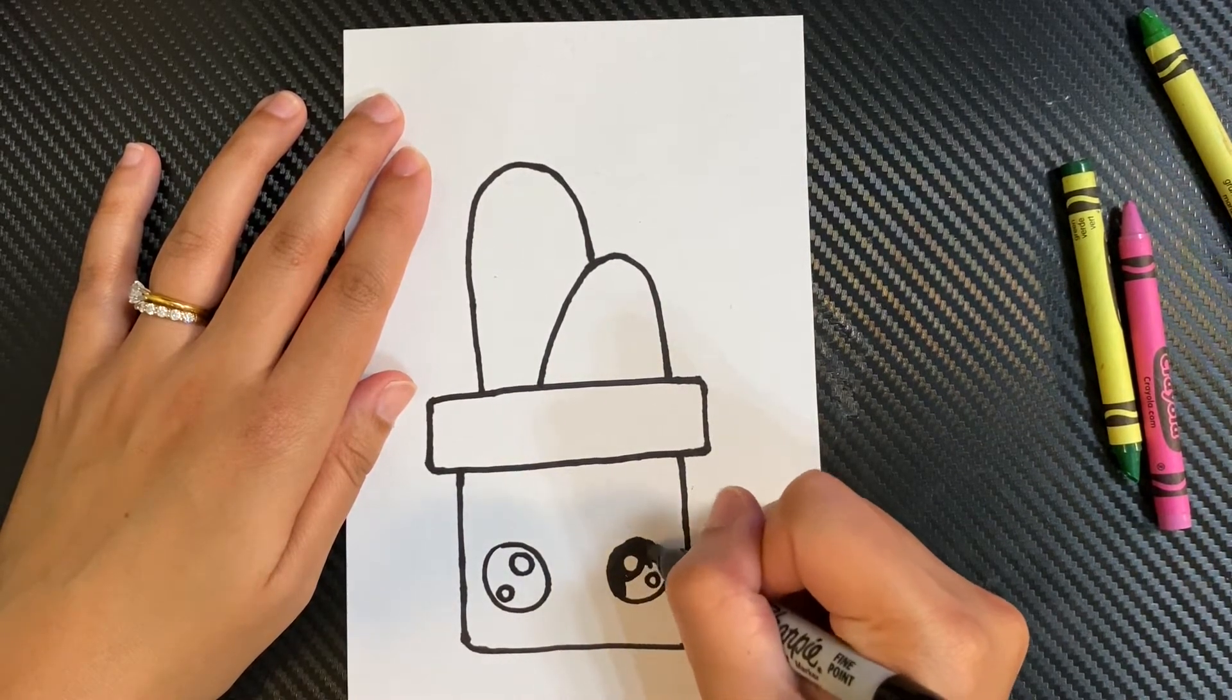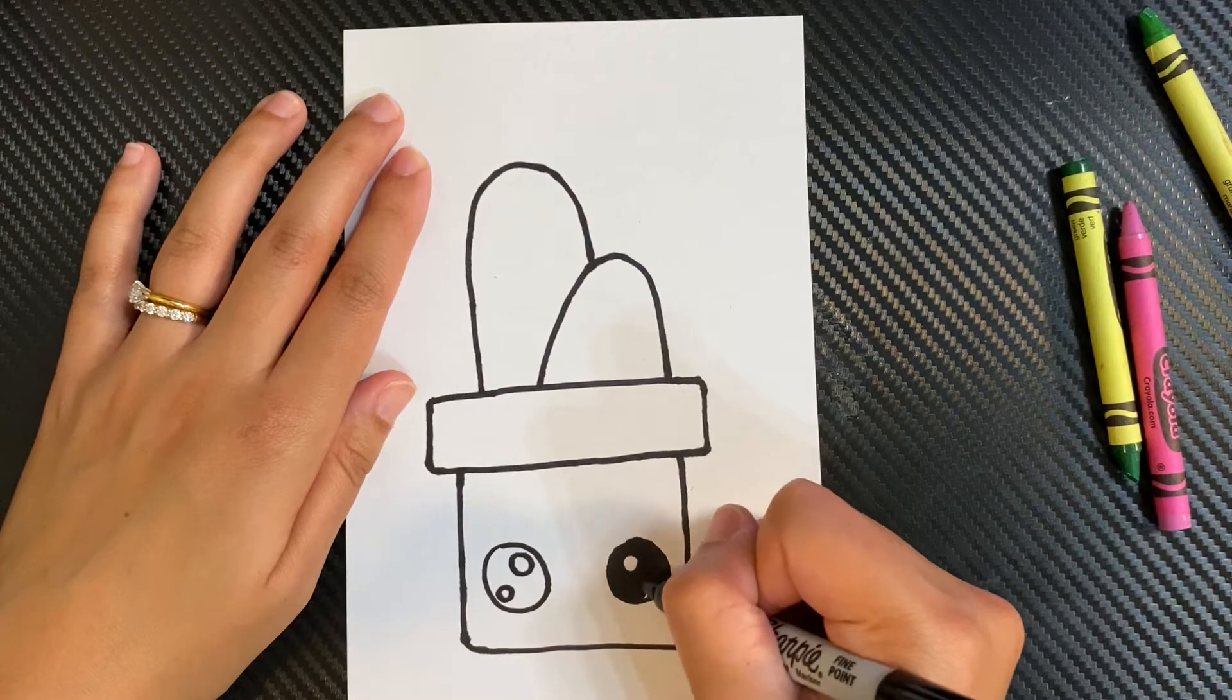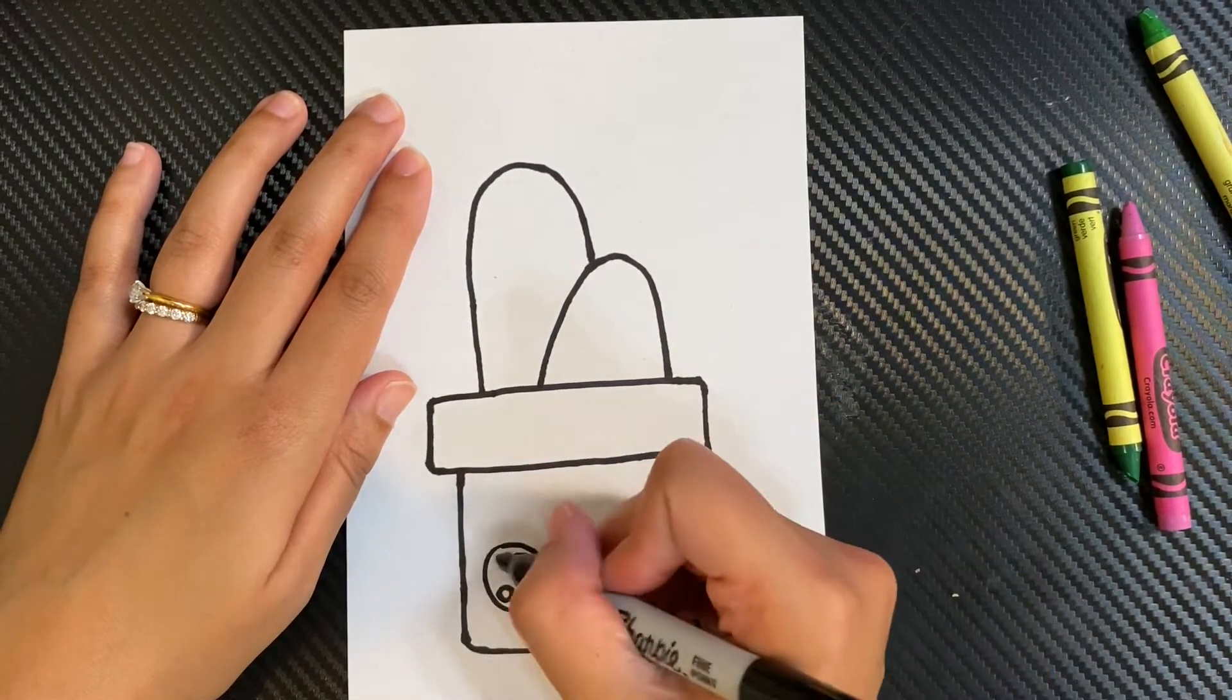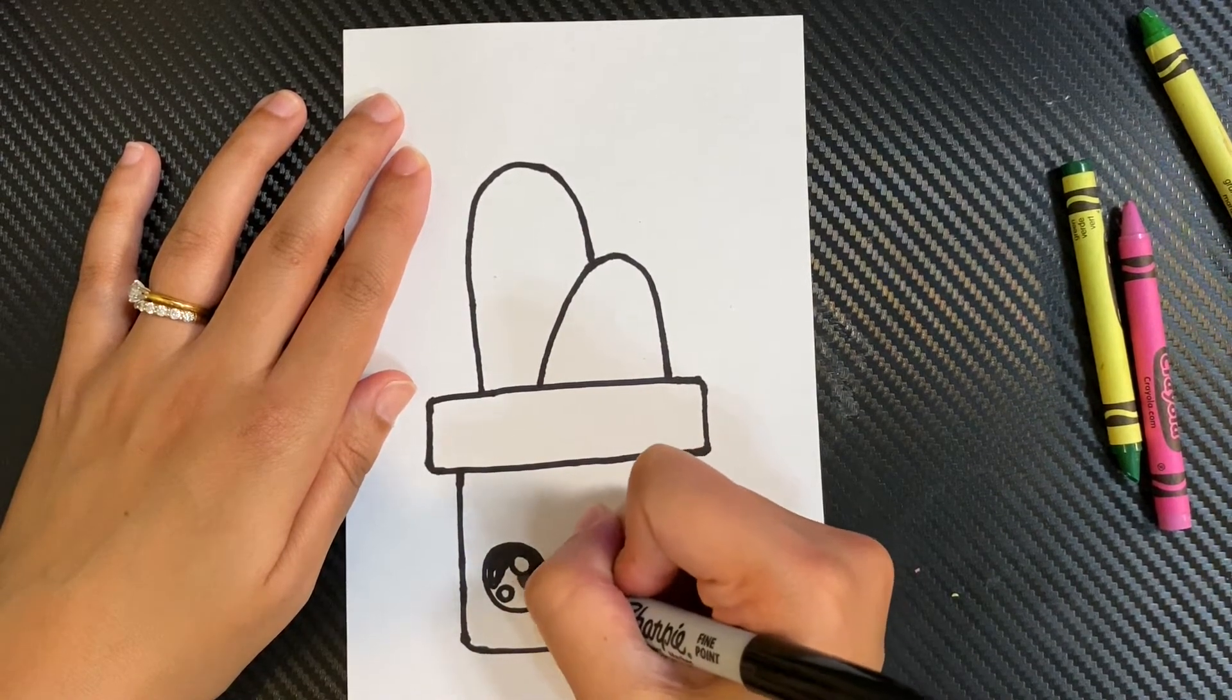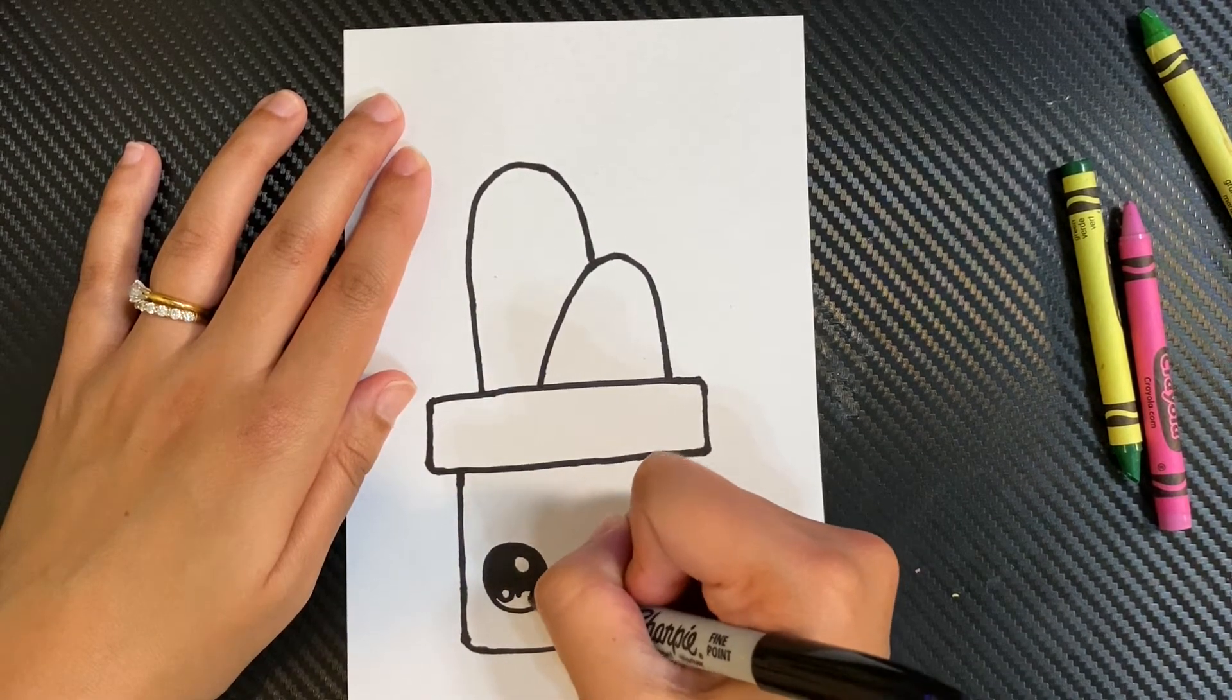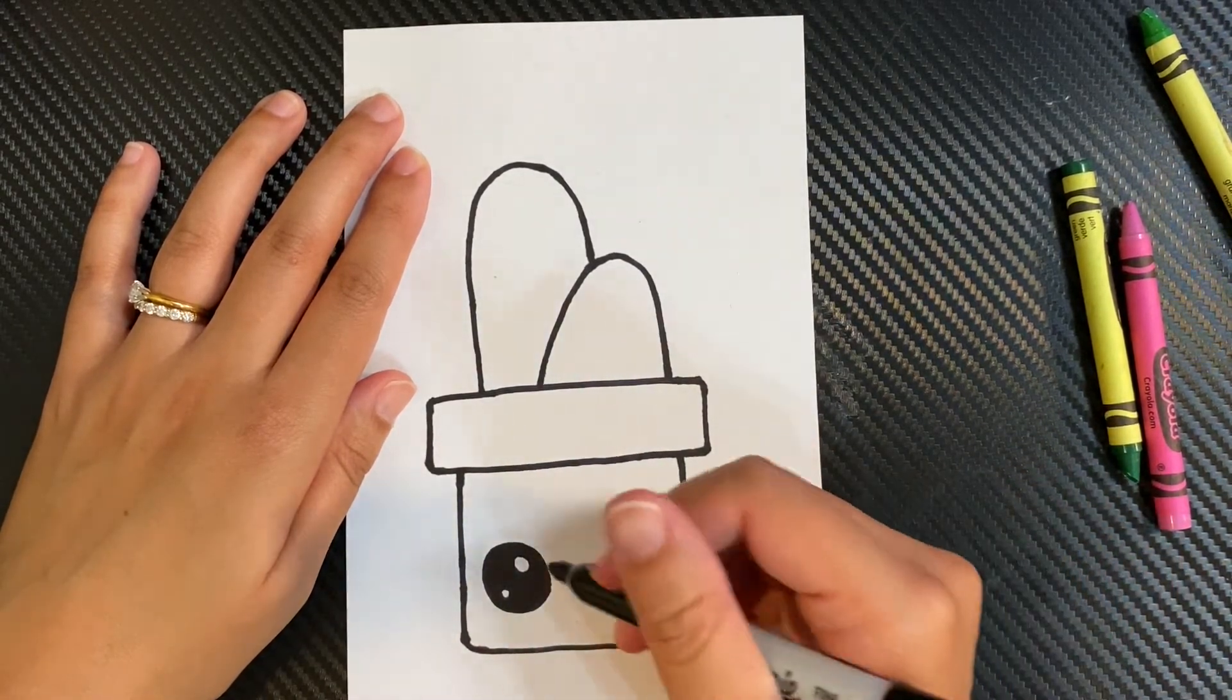I'm using marker, but you're welcome to do it in pencil or crayon. Whatever you have. Same thing for this eye. There. Now it looks like the eyes are kind of glistening and happy.